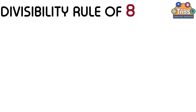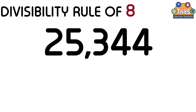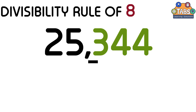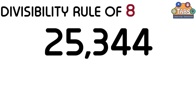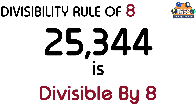Now let us take another example. 25,344. The last three digits of 25,344 is 344, and 344 is a multiple of 8. Therefore, 25,344 is divisible by 8.